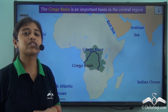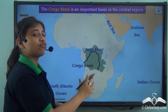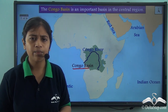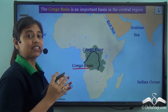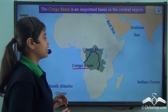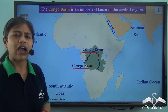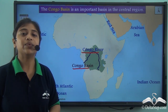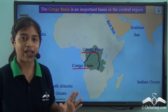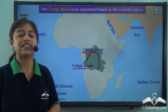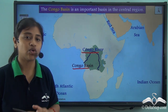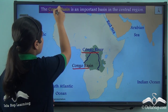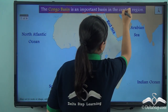Looking at one of the most important basins in the central portion of the continent of Africa, we have the Congo Basin. The Congo Basin falls in the equatorial belt, which means it receives abundant rainfall almost throughout the year and has tropical evergreen rainforest. So the Congo Basin is an important basin in the central region.